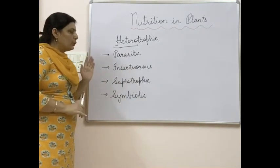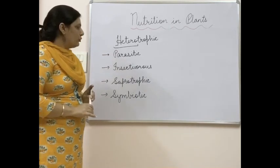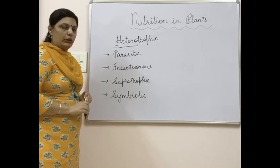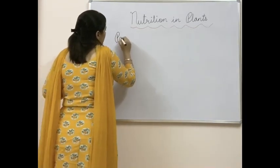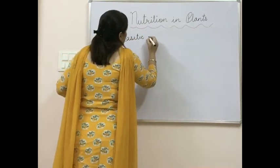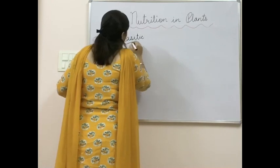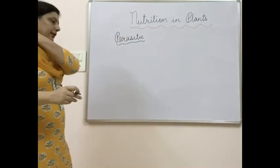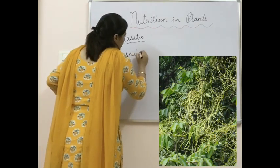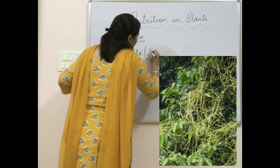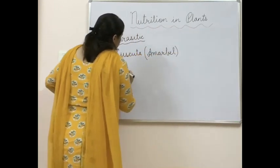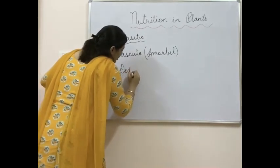Now we will study parasitic mode of nutrition, insectivorous mode of nutrition, saprotrophic mode of nutrition, and symbiotic mode of nutrition in detail. Parasitic mode of nutrition is a type of heterotrophic nutrition. One very common example of this is Cuscuta, also called 'Amarbel' in Hindi, and also known as 'dodder.'